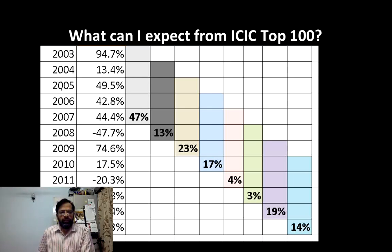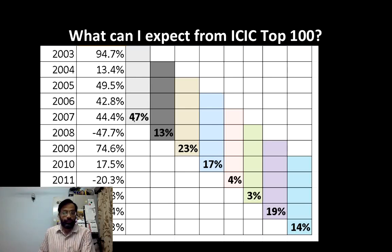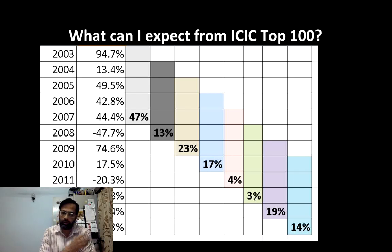Let's take the five-year period from 2003 to 2007 — the annualized return has been 47%. If I move this five-year window by one year to 2004–2008, that's 13%. Then moving it one more year: 23%, 17%, 4%, 3%, 19%, 14%. So sometimes you get 47%, sometimes you get lower than a savings bank account from ICICI Top 100.